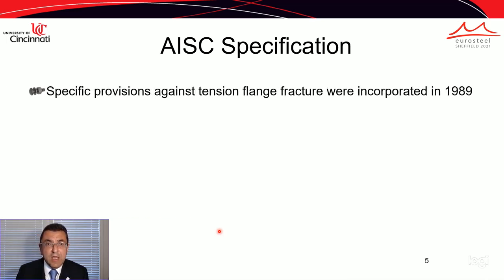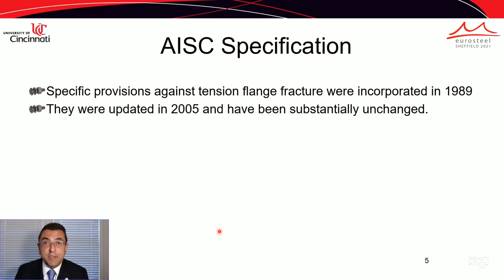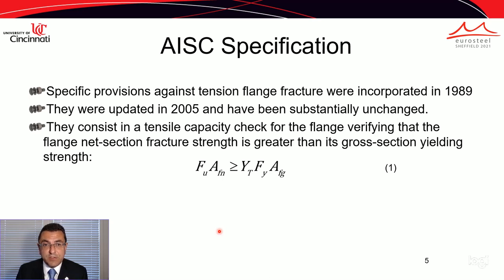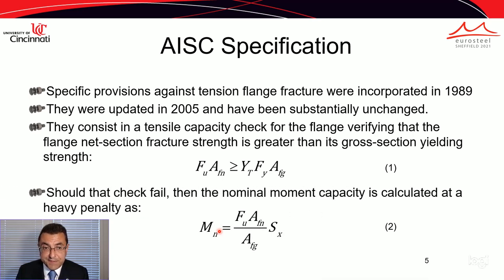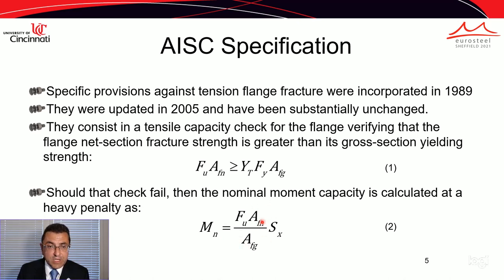In the AISC specification, provisions against tension flange fracture first appeared in 1989, were updated in the 2005 edition, and remain substantially unchanged to date. These provisions consist of a tensile capacity check to ensure the flange does not undergo net section fracture before developing its full gross section yielding strength. If this check is not met, the nominal moment capacity is calculated at a heavy penalty using the elastic section modulus for the gross cross section, further reduced by the ratio of net section area to gross flange area.